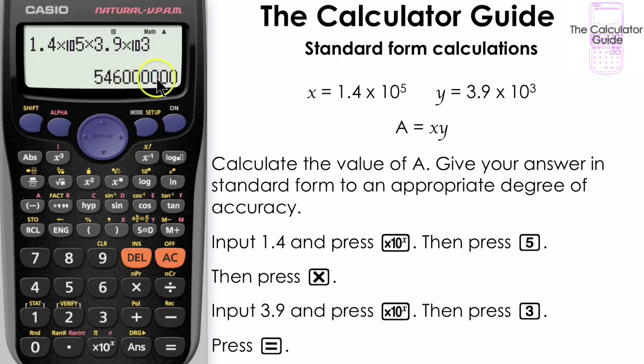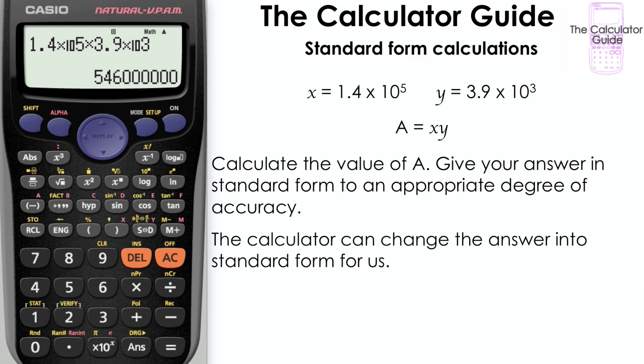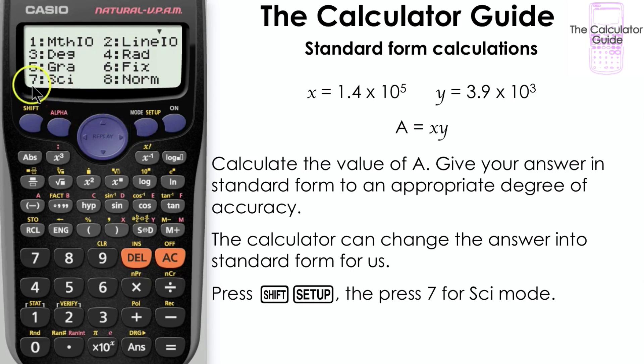Our answer is displayed here but it's not currently in standard form. We can use the calculator to change the answer into standard form for us. Press shift and then set up, then enter sci or science mode by pressing 7.